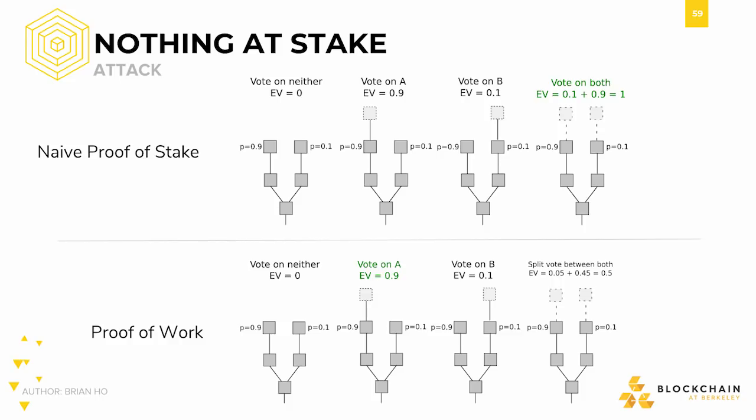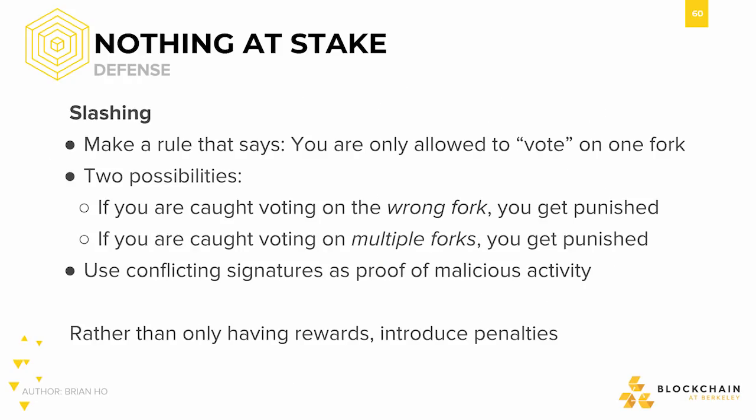This is troublesome because the implication is that there will never be a longest fork — both forks will continue to grow indefinitely. To discourage voting on incorrect forks, let's introduce a penalty. Though the solution is simple on the surface, it has great implications. There are two kinds of penalties to choose from: punish anyone who votes on the wrong fork, or punish anyone who votes on multiple forks. Both of these punishments are known as slashing.